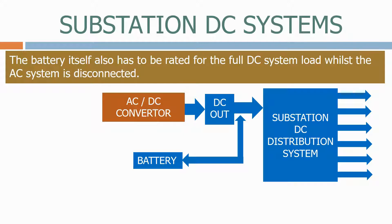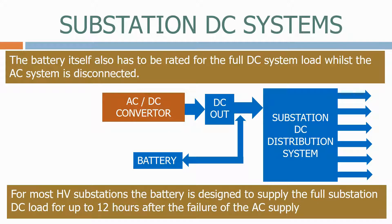The battery itself also has to be rated for the full DC system load whilst the AC system is disconnected. For most H3 substations, the battery is designed to supply the full substation DC load for up to 12 hours after the failure of the AC supply.